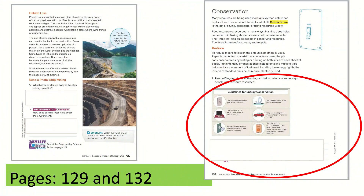There will be two questions from this lesson — one on page 129 and one question from page 132. The question from page 132 is going to be a written response question. A written response question means that you will have to write an answer. Page 129 will be multiple choice questions.